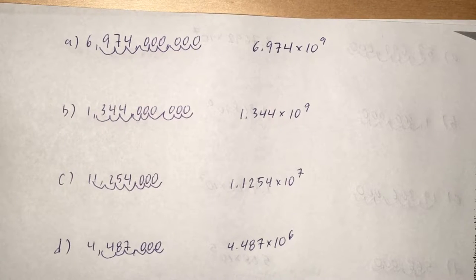So you can see that first one is 6,974,000,000. When we imagine where the decimal point would be,